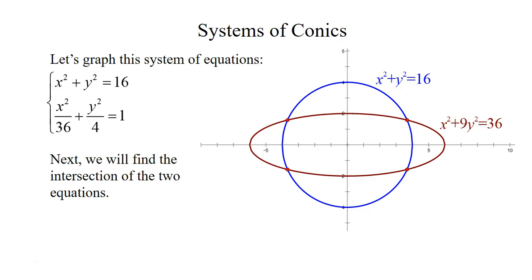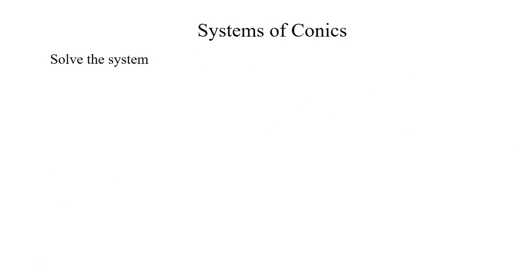Next what we're going to do is find where these two graphs intersect. So we're going to solve the system of equations by isolating y² in the first equation. So using the circle equation, we just brought the x² over to the other side.